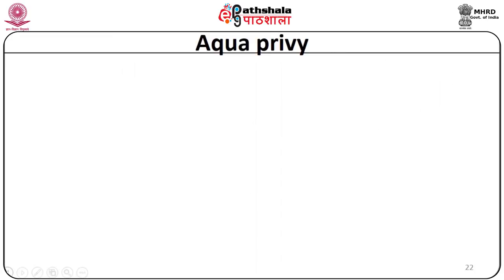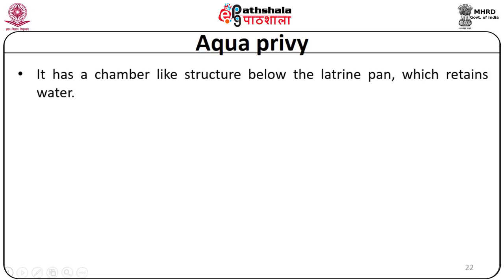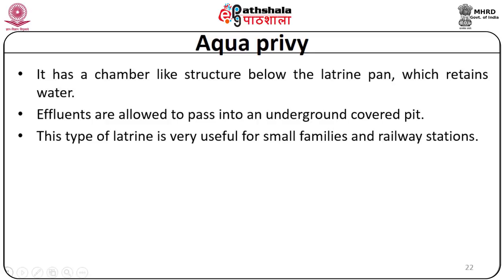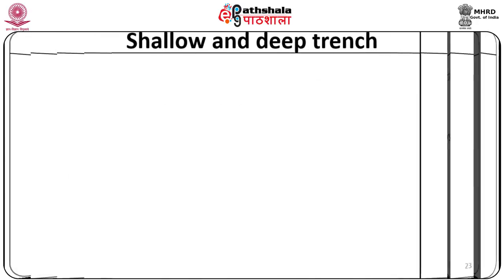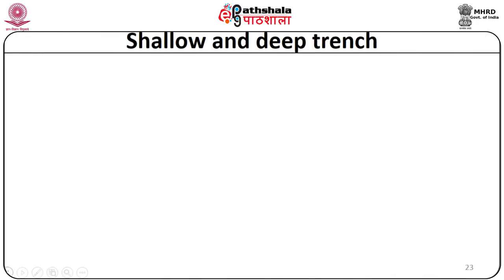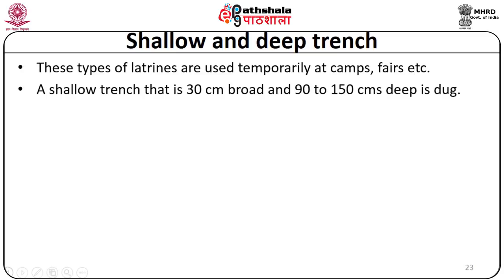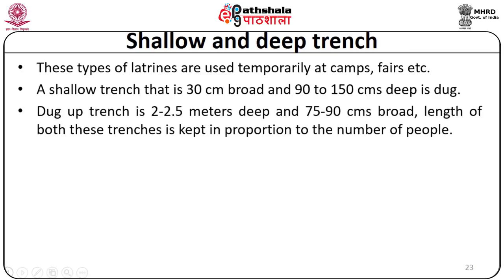Aqua privy has a chamber-like structure below the latrine pan which retains water. Effluents are allowed to pass into an underground covered pit. This type of latrine is very useful for small families and railway stations particularly. Shallow and deep trench latrines are used temporarily at camps and fairs. Shallow trench is 30 cm broad and 90 to 150 cm deep. Deep trench is 2 to 2.5 meters deep and 75 to 90 cm broad. The length of both trenches is kept in proportion to the number of people who are going to use them.